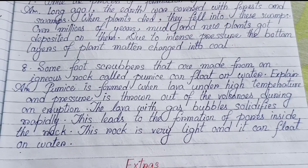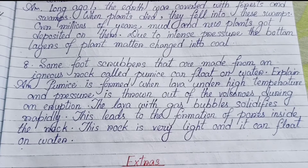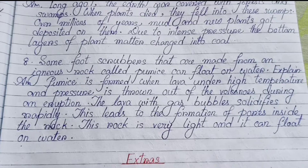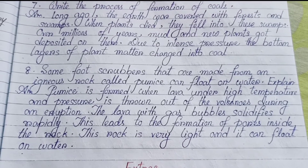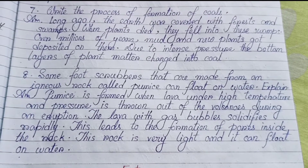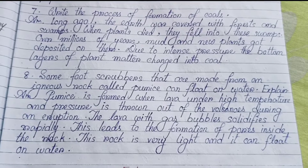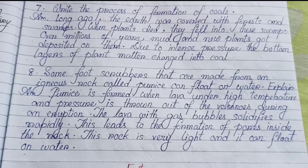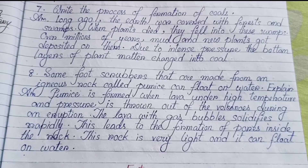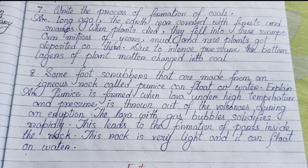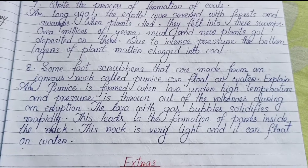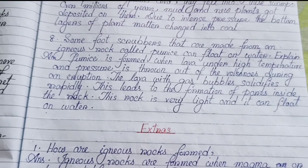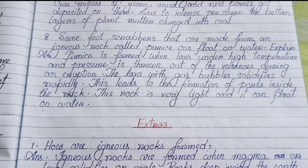Number eight: Some foot scrubbers are made from an igneous rock called pumice. Can they float on water? Pumice is formed when lava under high temperature and pressure is thrown out of volcanoes during an eruption. The lava with gas bubbles solidifies rapidly, leading to the formation of pores inside the rock. This rock is very light and can float on water.